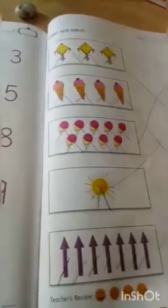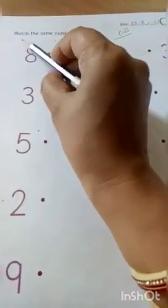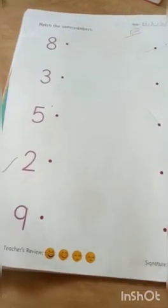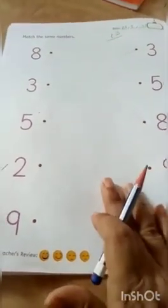Good morning, kids. Jai Swaminarayan, Bita. Take out your book number 6 on page number 42. So kids, what you have to do today? Match the same numbers. Now two rows are there. We had already learned and matched. Now it's revision for you.